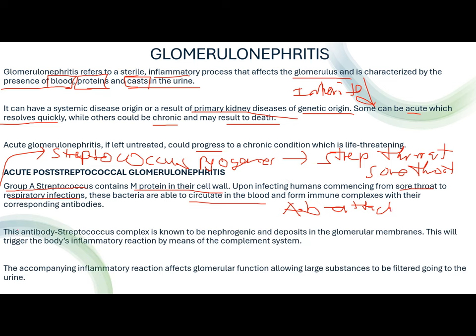Due to the antibody-streptococcus complex, it is nephrogenic — meaning it destroys the nephron and deposits in the glomerular membrane. This triggers the body's inflammatory reactions via the complement system. The accompanying inflammatory reaction affects glomerular function, allowing large substances greater than 70,000 daltons — such as hormones and other large molecular weight substances — to pass and enter the urine.